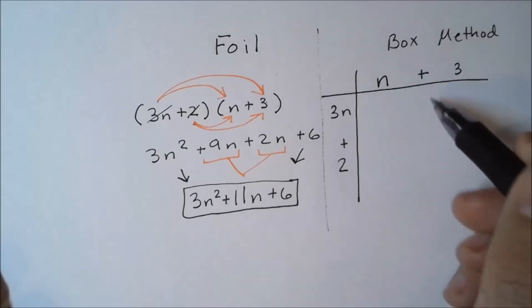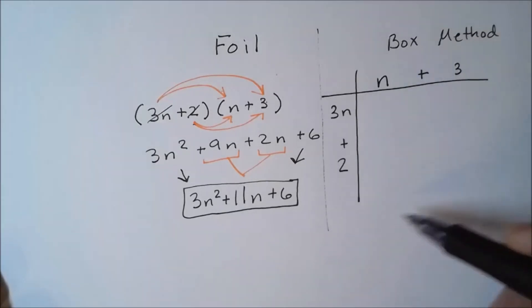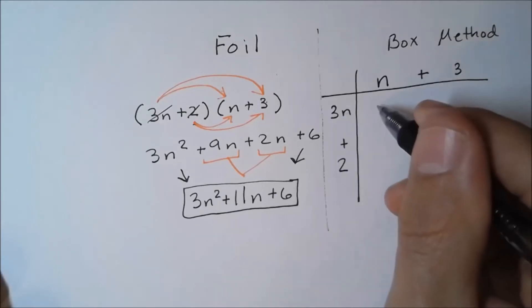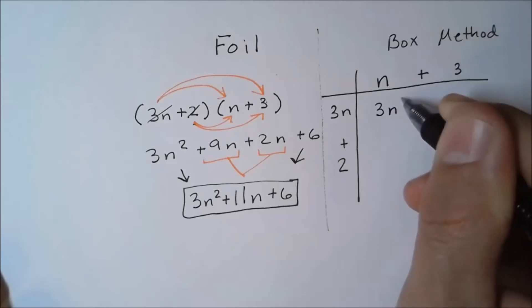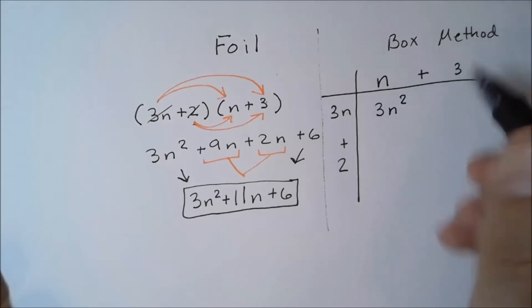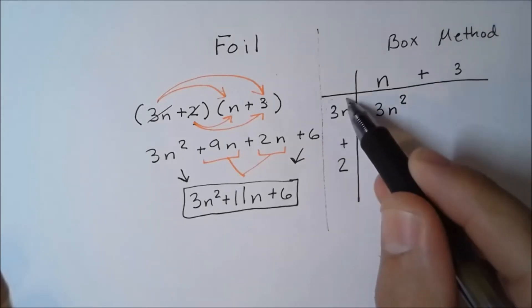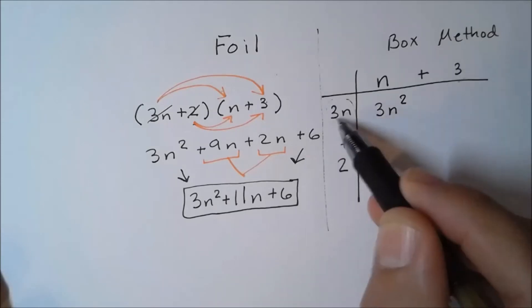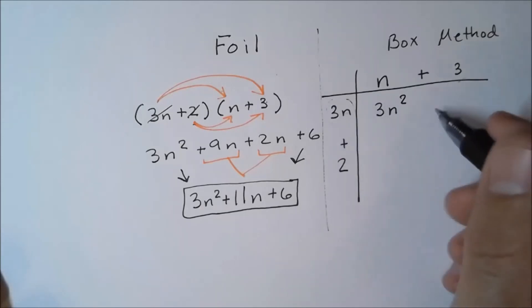This reminds me of a Punnett square in biology. I have 3n times 3n, which is going to give me 3n squared. Then I have this 3n times this 3, so notice I'm taking it out and running it up, multiplying that, and that's going to give me a positive 9n.